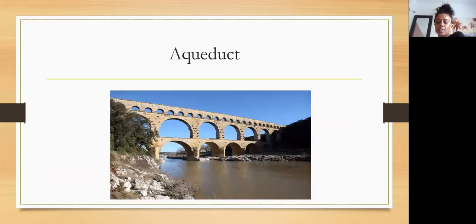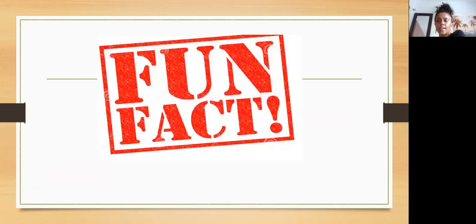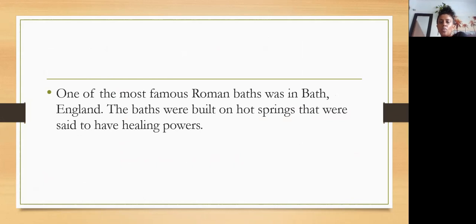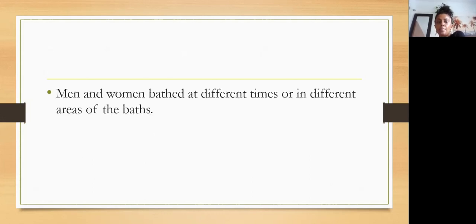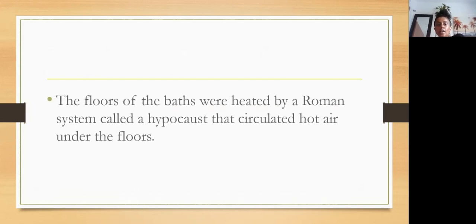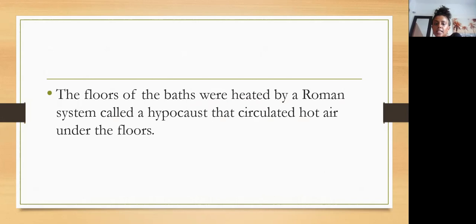You can see another picture of the aqueduct. Here are some fun facts. One of the most famous Roman baths was in Bath, England. The bath was built on hot springs that were said to have healing powers — the Romans believed the water itself had healing qualities. Men and women bathed at different times or in different areas of the bath, so they were not in the same place altogether. The floors of the bath were heated by the Roman system called a hypocaust, which circulated hot air under the floors.